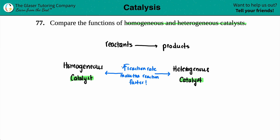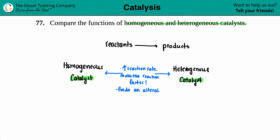Whether you're a homogeneous catalyst or a heterogeneous catalyst, they will both increase the reaction rate — making the reactants convert into products at a much faster rate. By doing this, it finds an alternate pathway — a different pathway.